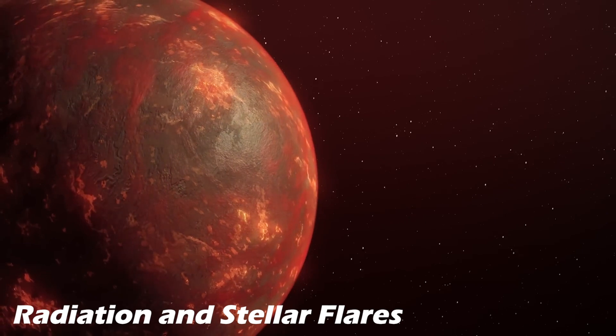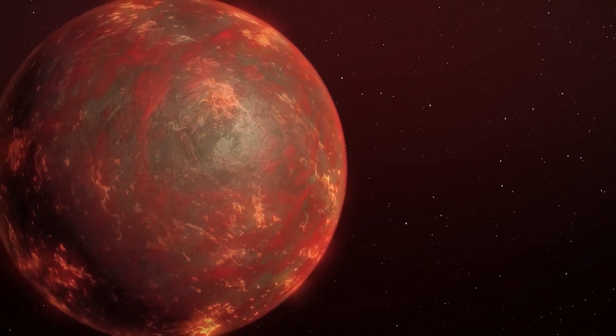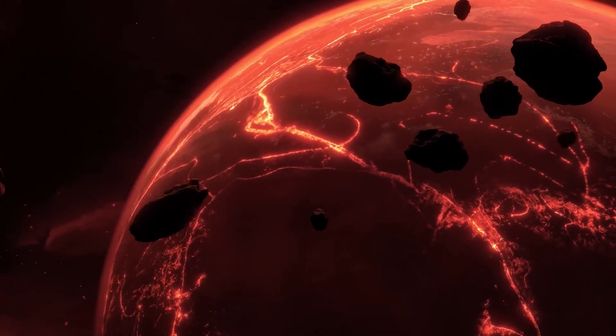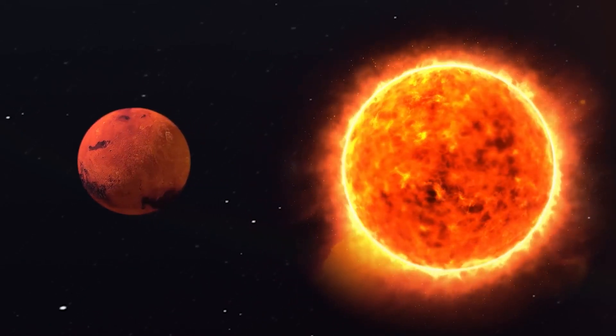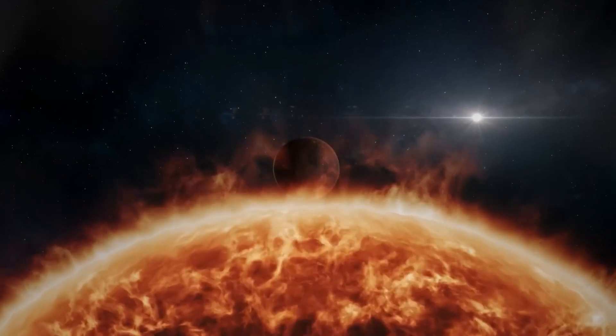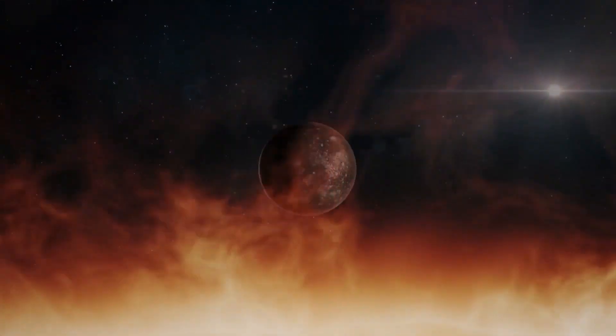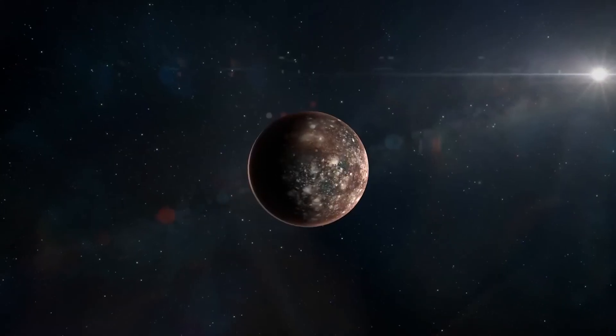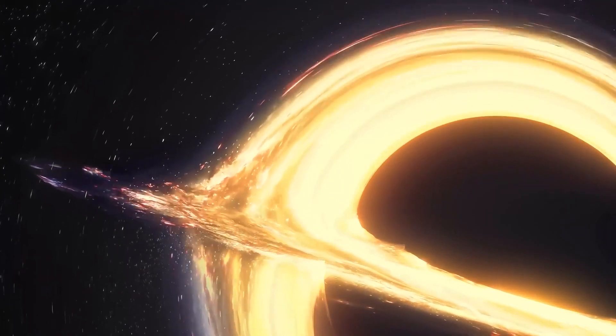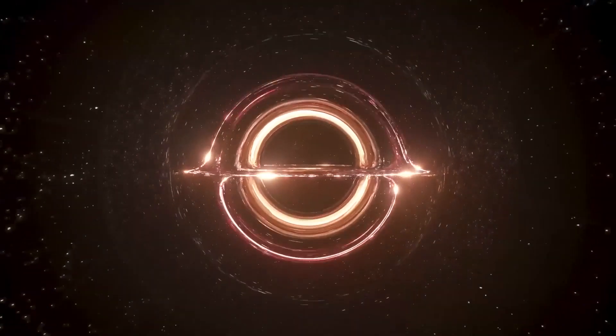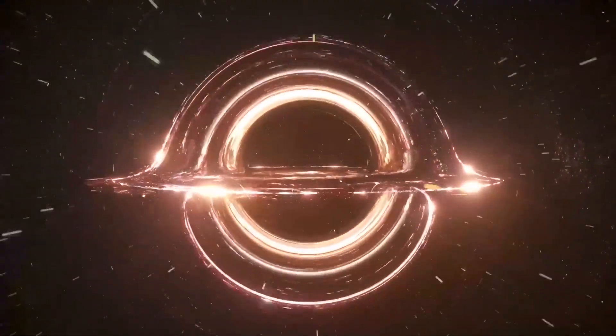Radiation and Stellar Flares. Another significant challenge for humans to live on Kepler-22b is the planet's exposure to radiation and stellar flares. The planet orbits very close to its star, which means that it is likely to be bombarded by high levels of radiation and intense stellar flares. Stellar flares are eruptions of energy from a star's surface that can release as much energy as a billion atomic bombs. These flares can cause significant damage to a planet's atmosphere and surface, and they could be particularly harmful to any life that exists on Kepler-22b.